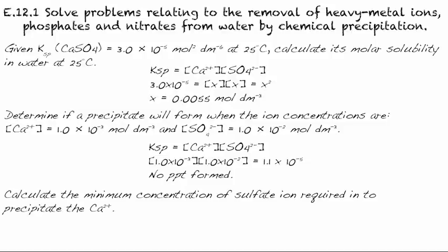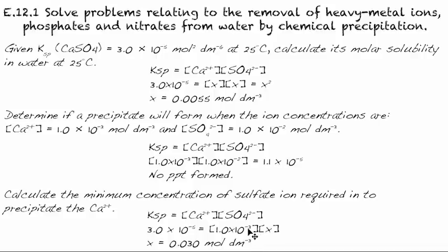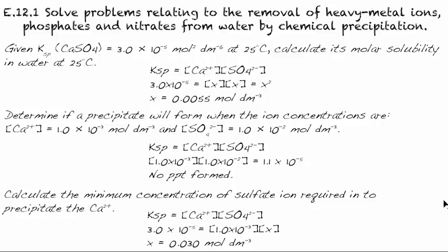Another type of question: calculate the minimum concentration of sulfate ions required to precipitate the calcium. We set up the same Ksp expression. We know the calcium ion concentration is 1.0 × 10⁻³, and we're asking what concentration of sulfate will give us a solubility product that equals Ksp — because when it equals Ksp, precipitation begins. We plug in what we know: Ksp = 3.0 × 10⁻⁵ and [Ca²⁺] = 1.0 × 10⁻³, solve for x, and find that a sulfate concentration of 0.03 mol dm⁻³ will start precipitation of calcium sulfate.